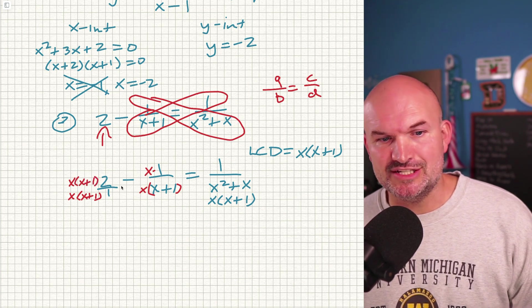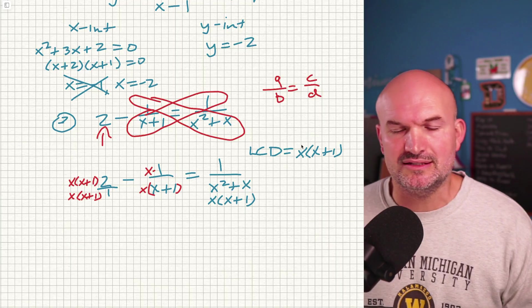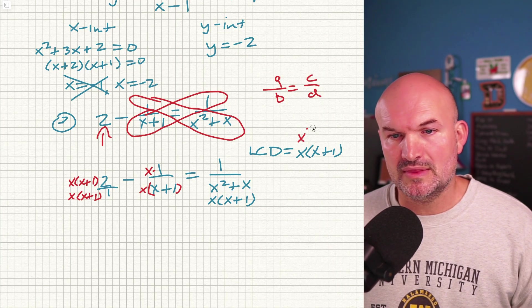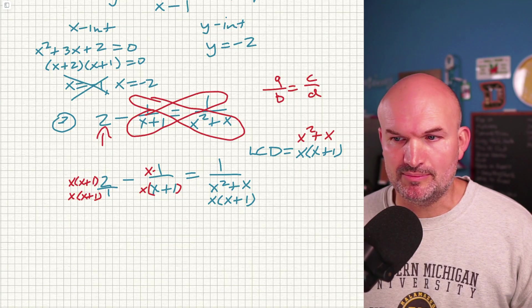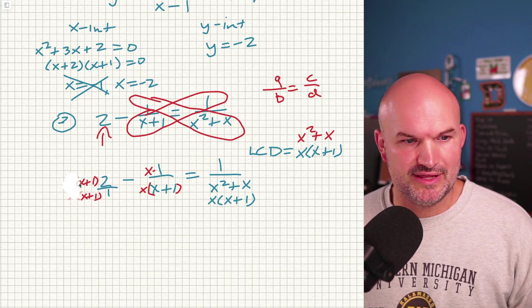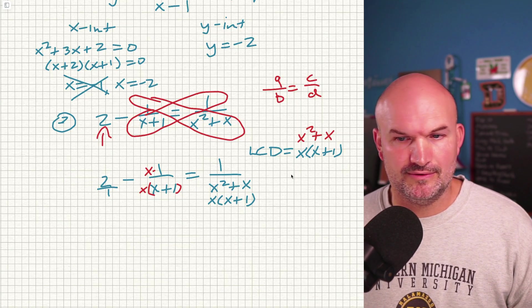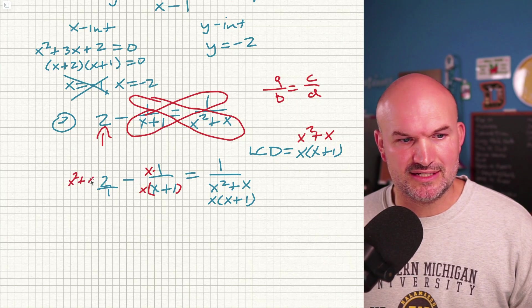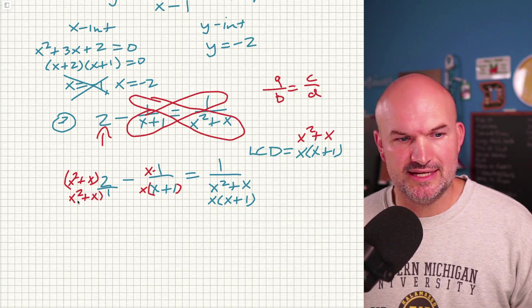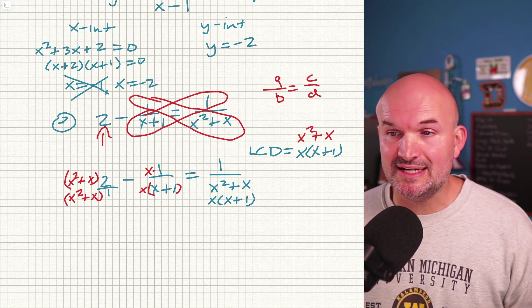Now, it might be easier in this example just to not write it in the factor form, but write it in the expanded form, which is X squared plus X. And I'm not sure why I didn't do that. So we're going to do it here. OK, so let's write that as X squared plus X. That's going to multiply here in the numerator as well as in the denominator.